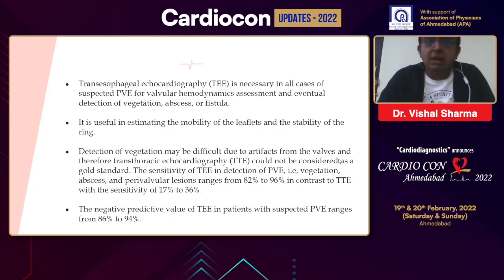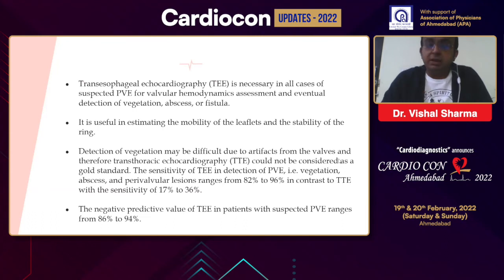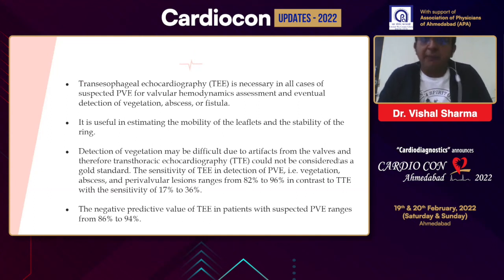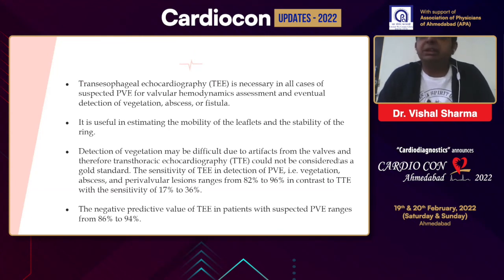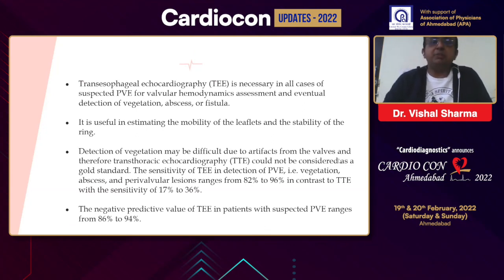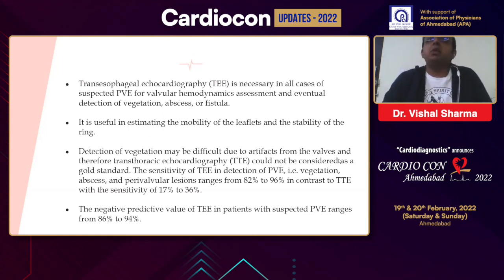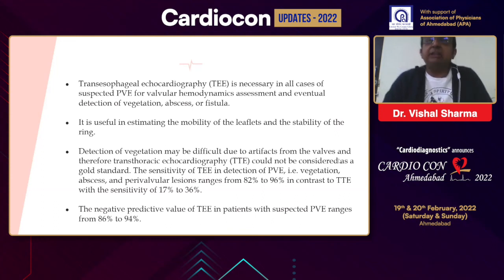To summarize: transesophageal ECHO is necessary in all cases suspected to have prosthetic valve endocarditis — not only for diagnosing but for valvular and hemodynamic assessment, and detection of vegetations attached to the valve, abscesses, or fistula. It is useful in estimating the mobility of leaflets and stability of the valvular ring. Detection of vegetations is difficult due to artifacts when doing transthoracic ECHO, and hence transthoracic ECHO has limitations. The sensitivity of TEE in detection of prosthetic valve endocarditis is as high as 82 to 96%.